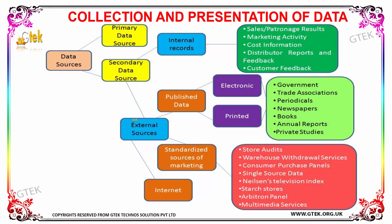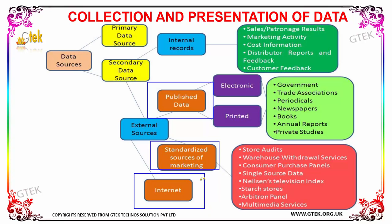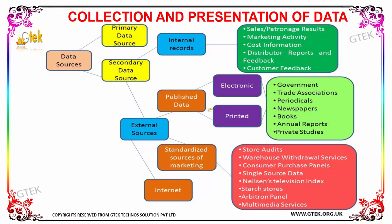External sources are classified into three categories: published data, standardized sources of marketing, and the internet. Published data is further classified into two types — electronic and printed — which in turn cover government, trade, periodicals, newspapers, books, annual reports, and private studies.